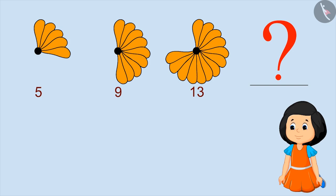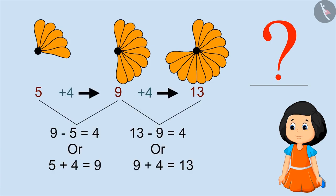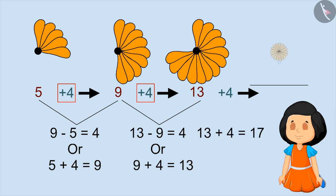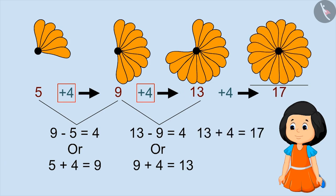Children, you can pause the video to find out the number. First five, then nine, then thirteen. These numbers have a difference of four. So the next number will be thirteen plus four, that is seventeen. This means Muni will put seventeen petals in the next round.